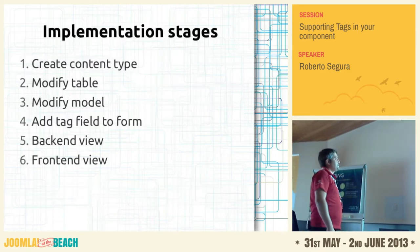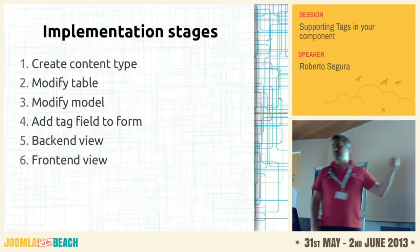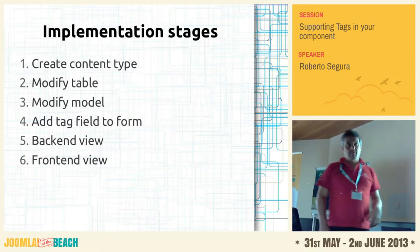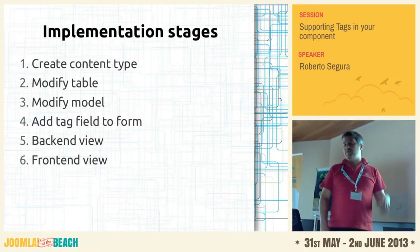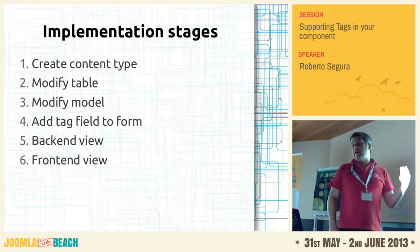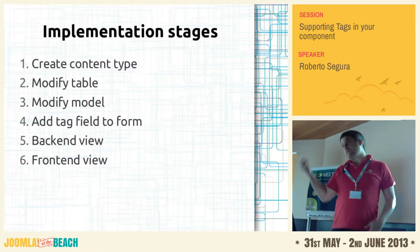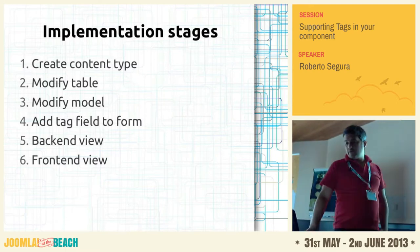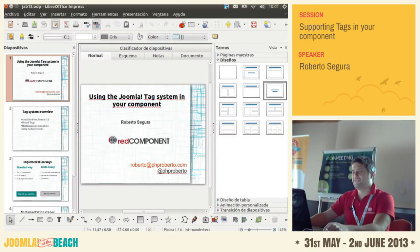In this talk we are going to cover the standard way, with some basic advice for implementing it in your own component. There are six steps for using the tag system like it's done in the core: first, create the content type during component installation; second, modify the backend table; third, modify the model; fourth, add a tag field to the XML form; fifth, modify the backend view; and sixth, modify the frontend view.